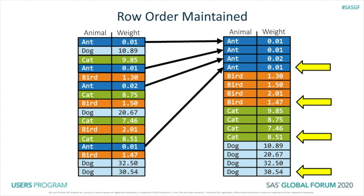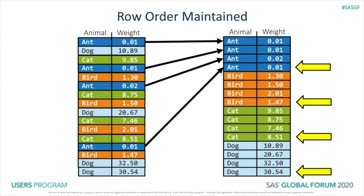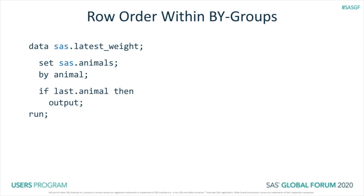Let's take a look at the code that does this. After we've sorted the data, this data step uses a set with a by statement. On the last row of the group, we do an output, and we see this result if we were to proc print it.